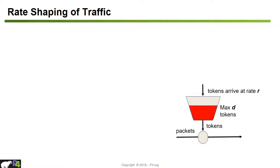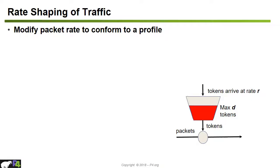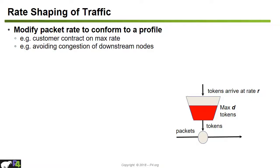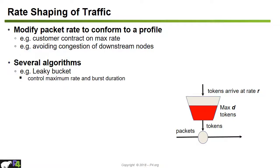Another data plane operation is traffic shaping, which means modifying the packet rate to conform to a given profile. For example, if a customer has a contract for 10 Mbps but is sending more than that into the switch, the switch runs a rate shaping algorithm to check the arrival rate and mark packets as conforming or out-of-profile using the type-of-service field in the IP header. The leaky bucket algorithm controls the maximum rate and burst duration for each flow or traffic aggregate.